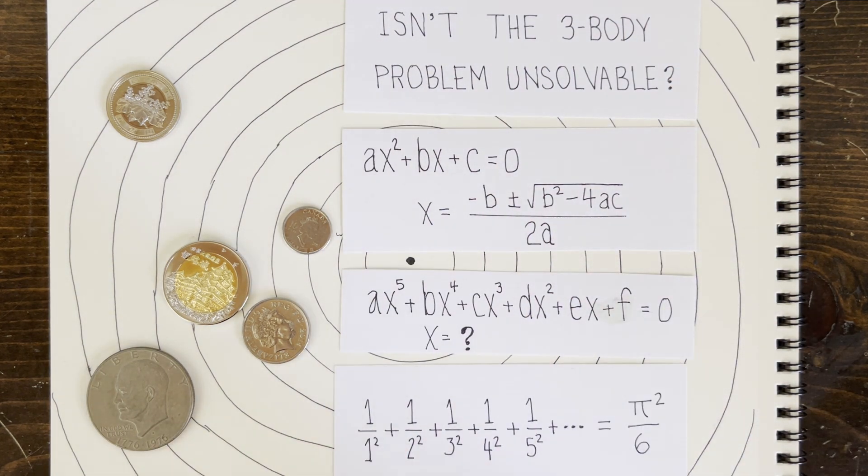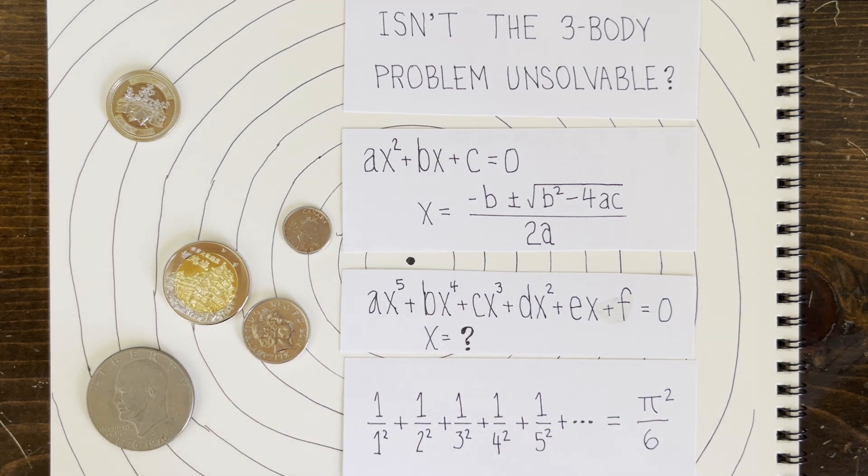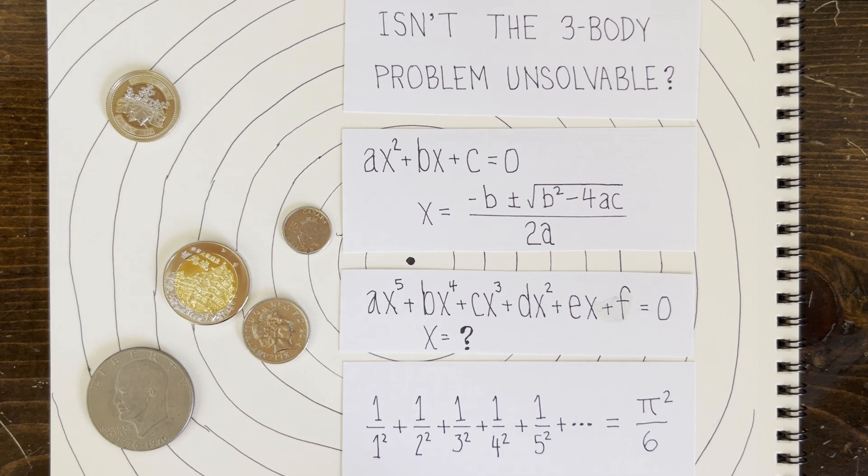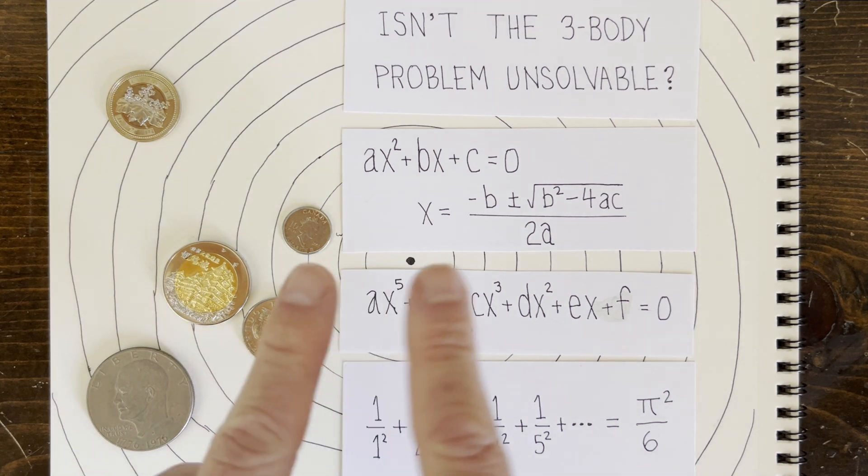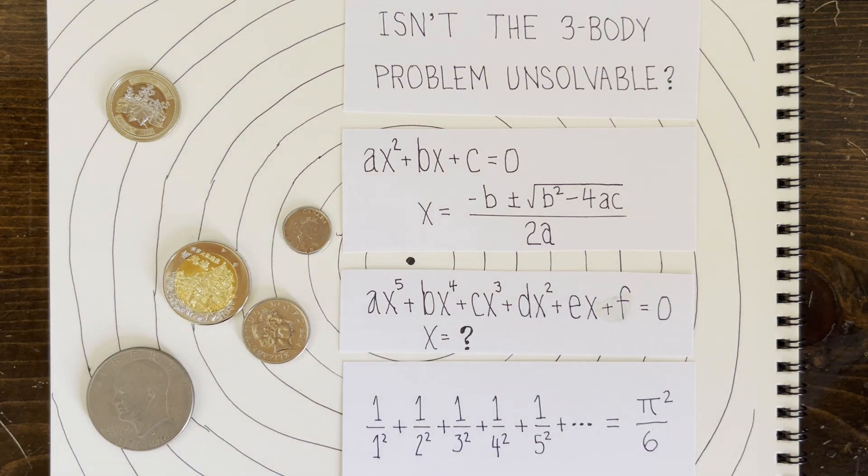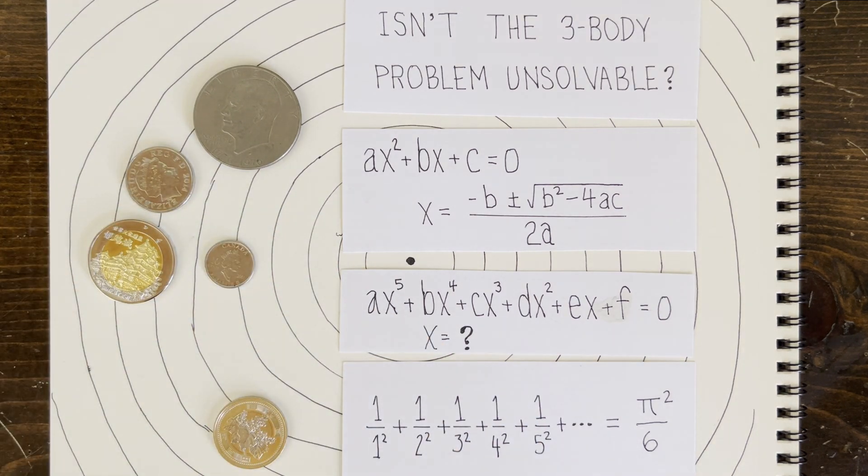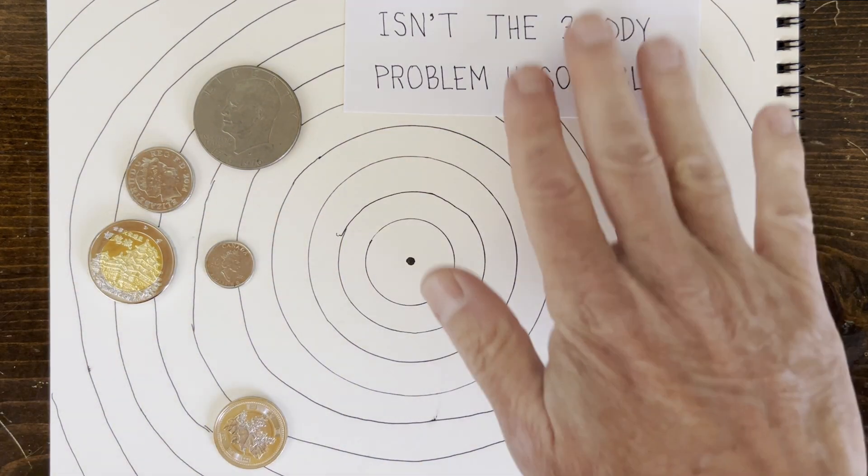Also, here's a closed-form solution for an infinite series discovered by Euler. I guess it's okay to have pi in the closed form, even though if you try to write it down, you get another infinite, non-repeating sequence. So some 3-body trajectories are non-repeating. That's been known for a long time. They never settle down. And sometimes a body wanders off into space, never to return.